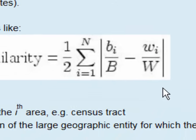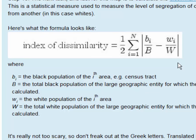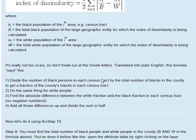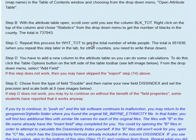The absolute value — represented by the two bars — ensures there are no negative numbers. If a result comes out negative, we just turn it to positive. Then we sum the whole thing and multiply it by one half, or 0.5. Don't get freaked out — the first rule of geography is there's no freaking out. We can handle this; it's not too bad and you are capable of doing it.